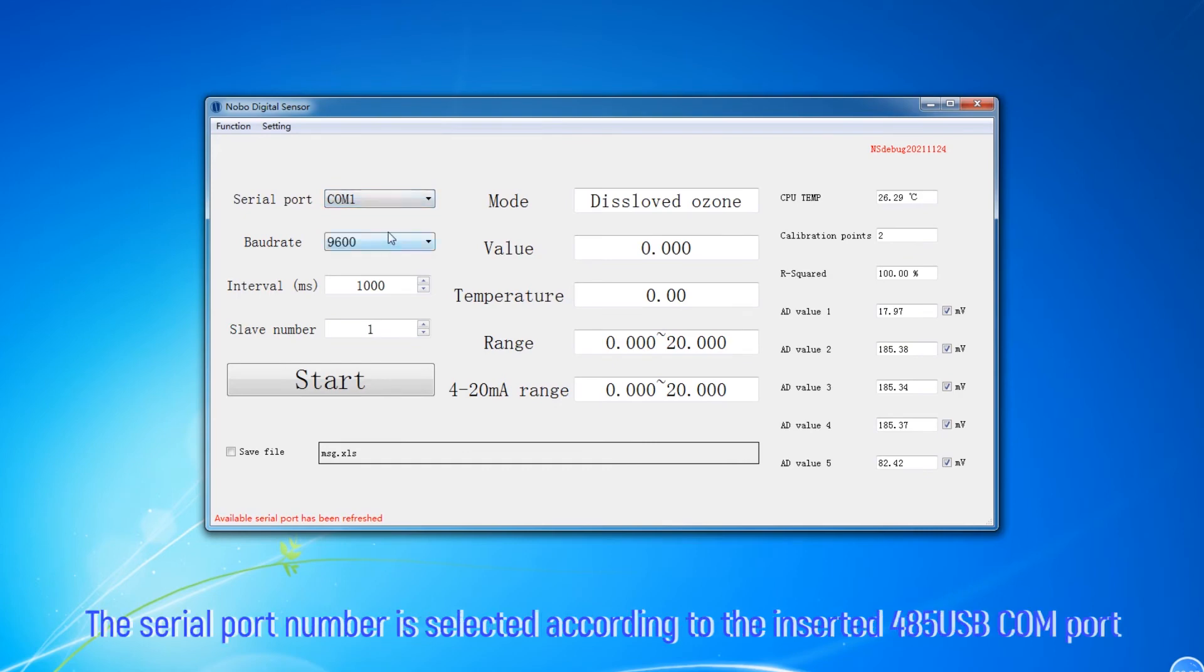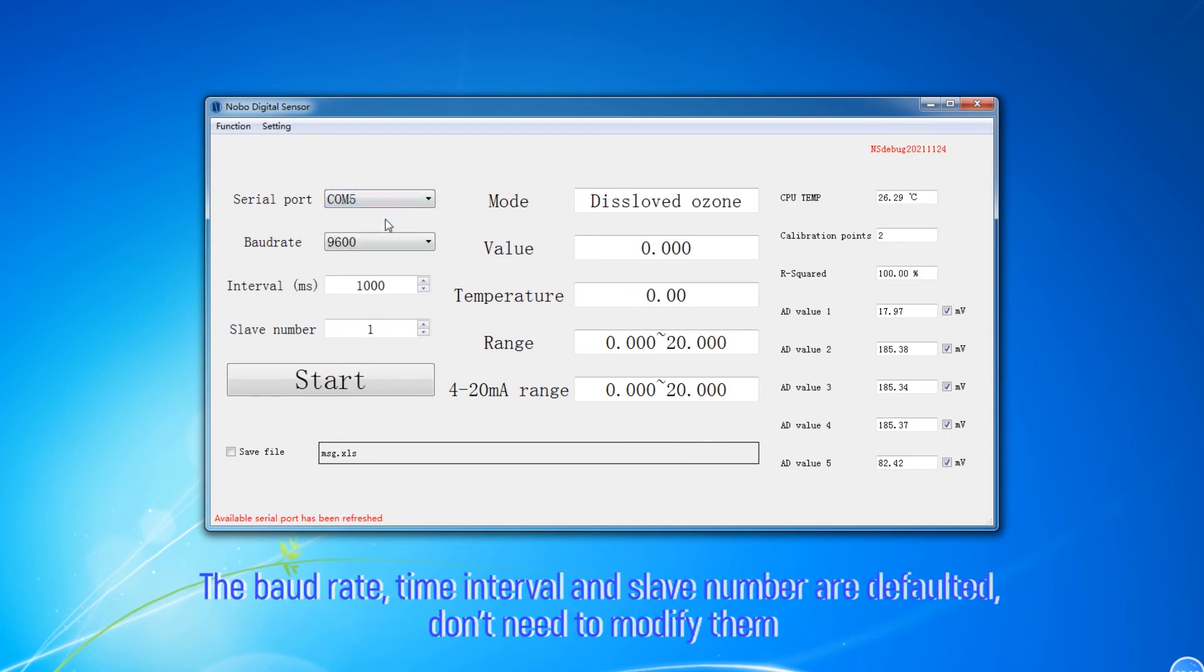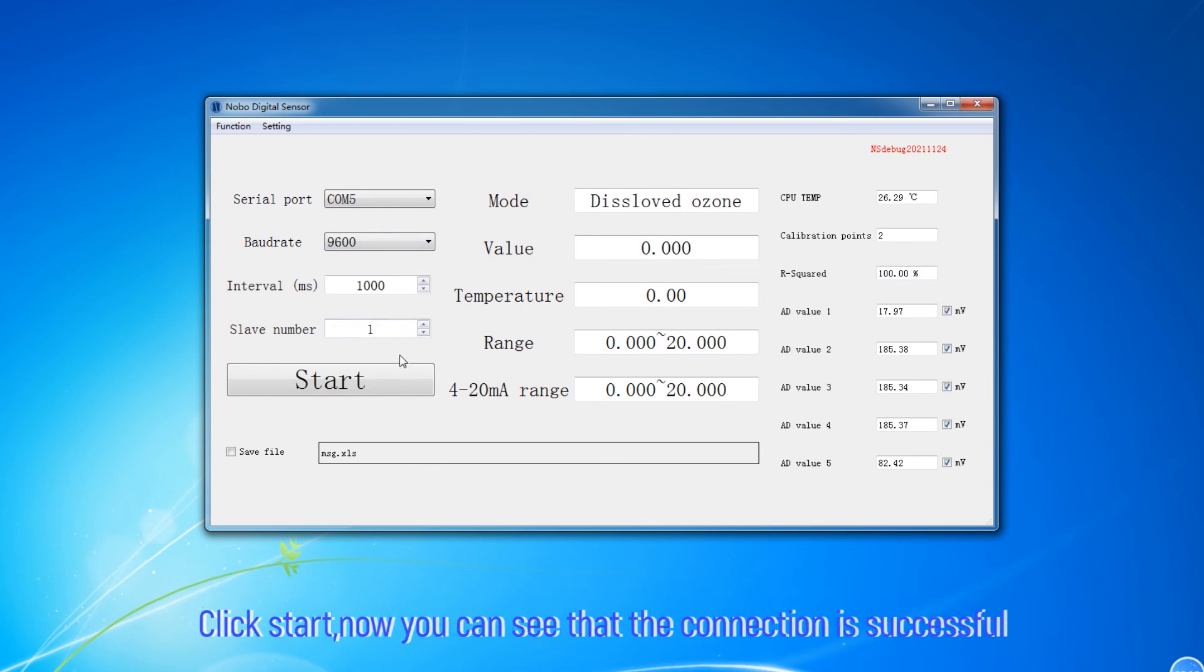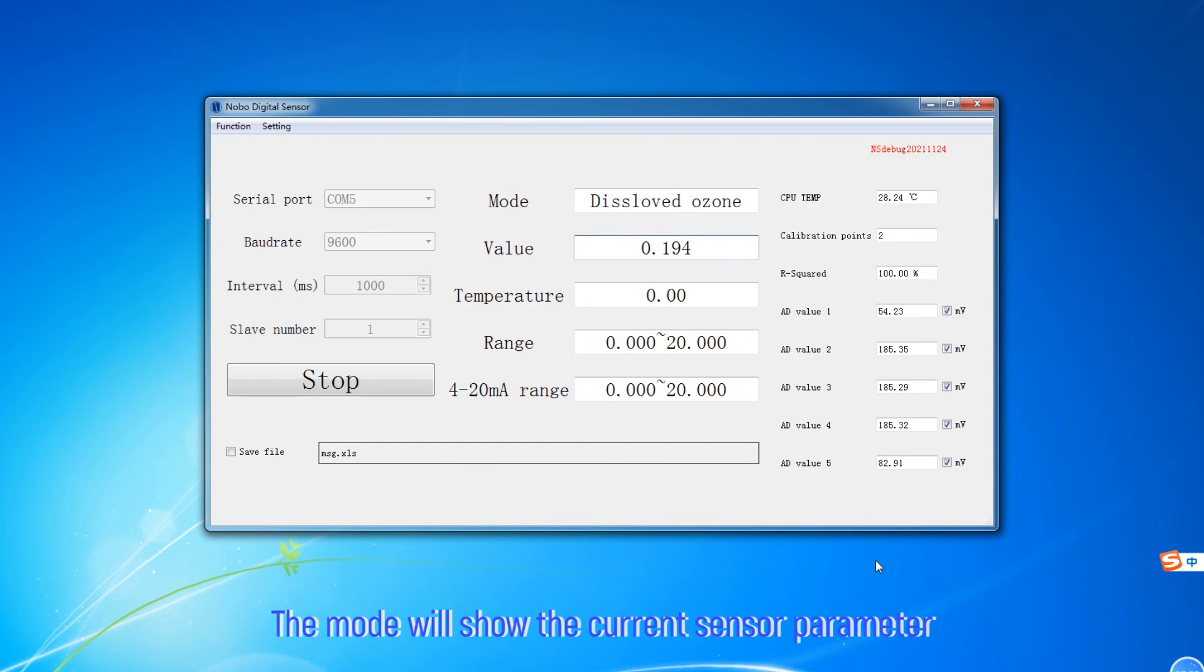Serial port number is selected according to the inserted 485 USB COM port. The baud rate, time interval, and slave number are defaulted and don't need to be modified. Click Start. Now you can see that the connection is successful and the mode will show the current sensor parameter.